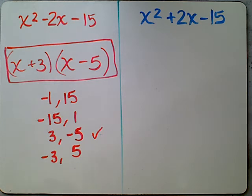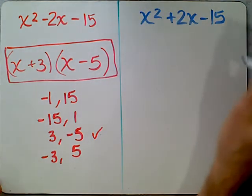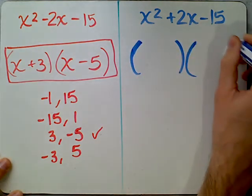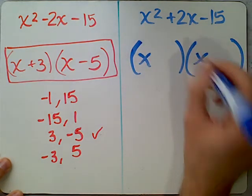Now, if you look at the second trinomial, we can steal these factors from the first question and use them again because we have the same C value. So again, we want to set up the two sets of parentheses. We'll put our x's here and here.